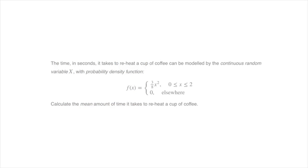Here's an example. We're told that the time in seconds it takes to reheat a cup of coffee can be modeled by the continuous random variable capital X, with probability density function f(x), which equals the piecewise function defined as three eighths of x squared for all x contained between zero and two, and it's equal to zero elsewhere.